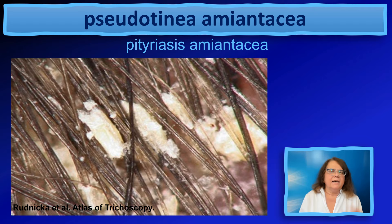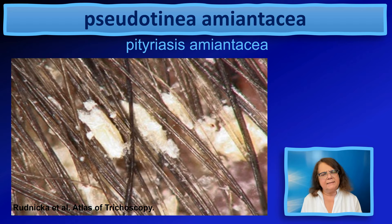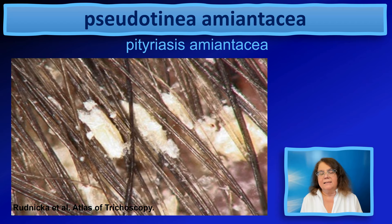Pseudotinia amiantacea may be a manifestation of many diseases, including psoriasis. Here you see the typical trichoscopy image of pseudotinia amiantacea with the typical multiple hair casts. Again, just to repeat: this is not typical of psoriasis — it may be present in any disease which has this clinical manifestation.